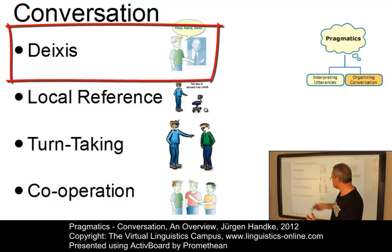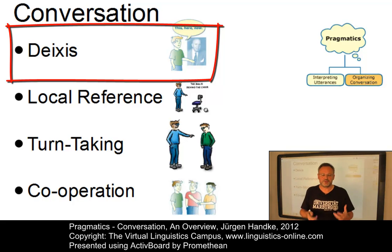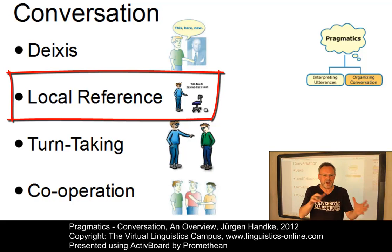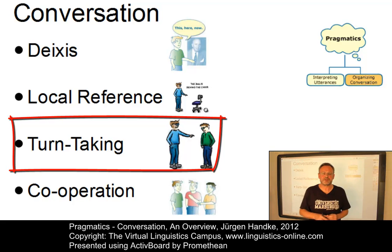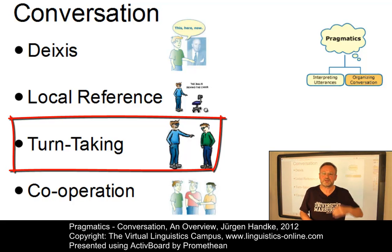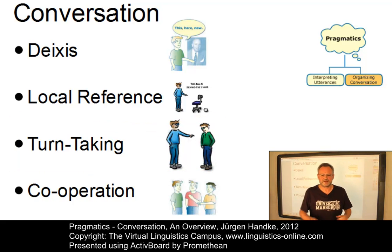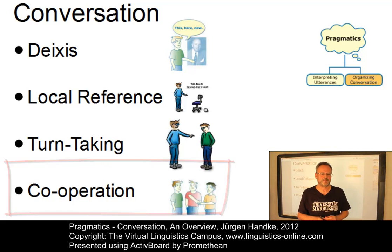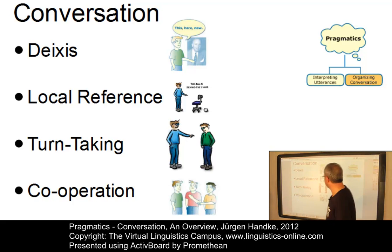We will look at deixis — that is, the techniques of using particular elements that can point at certain things. We will discuss local reference — that is, how the elements we use in a conversation are organized in space and in time. We will look at the rules of turn-taking — the rules that define whose turn it is to say something. And finally, we will look at the main interpretive principle, the so-called cooperative principle.